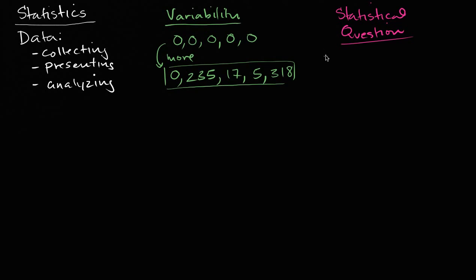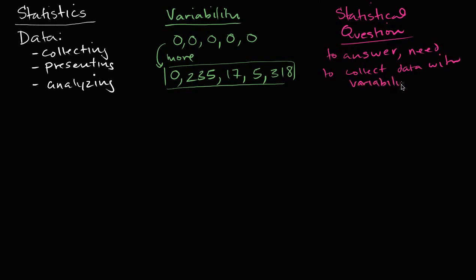One possible way to think about when you need to bring out your statistical toolkit is: these are questions that, to answer them, you need to collect data with variability. That kind of makes sense, but we need to see some tangible examples of things that are statistical questions and things that are not statistical questions.